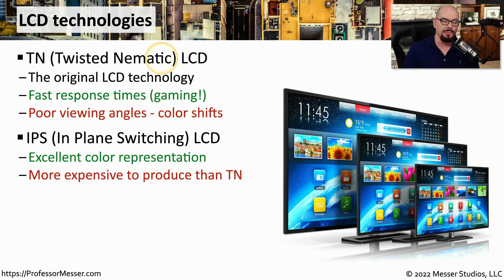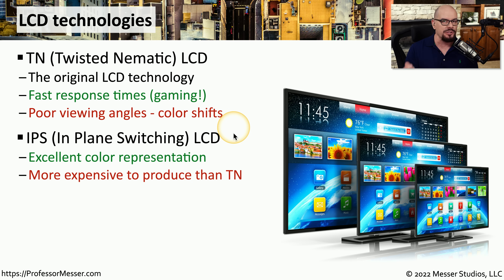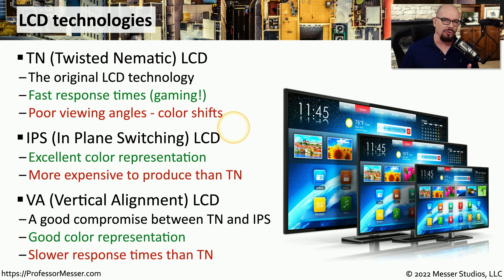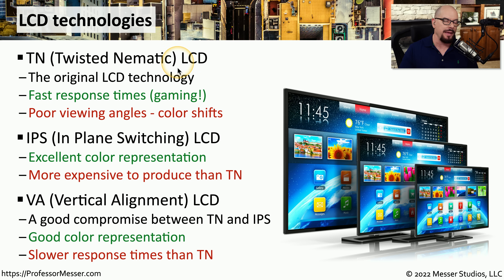If you're looking for the best possible color representation on an LCD display, you'll want to use an IPS LCD. IPS stands for in-plane switching, and it gives you very good color representation, which is great for graphics or desktop publishing, though these are slightly more expensive than a TN. If you want something in the middle between TN and IPS, you may want a vertical alignment LCD, or VA display. This has good color representation, but response times are a bit slower than a twisted pneumatic LCD.